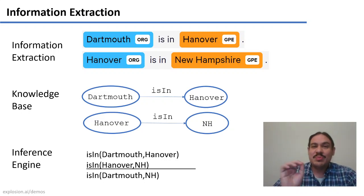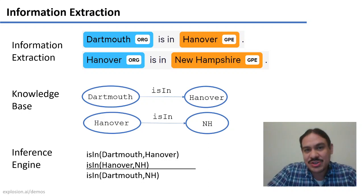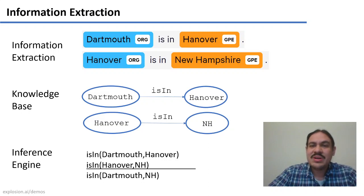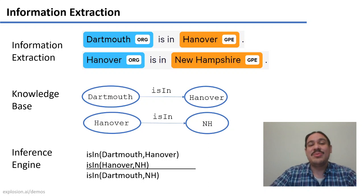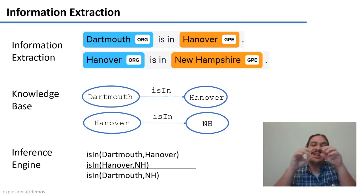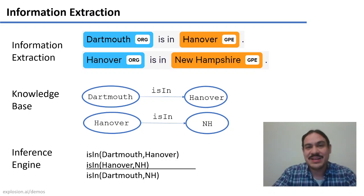However, in order for us to build a knowledge base, we need to get information from the data — we need information extraction. For example, the capability of identifying Dartmouth as an organization and Hanover as a geopolitical entity. Also, New Hampshire is a geopolitical entity. So once we have extracted that, we can then have these as entities and we can find the relationship that links them.